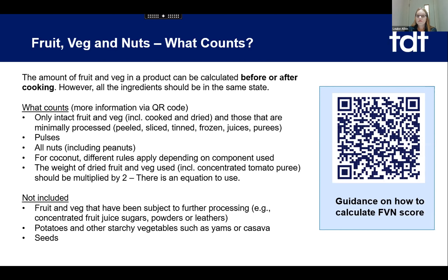Coconut can be counted, but there are different rules depending on the component used. The weight of dried fruit and veg used — you have to apply a multiplication to the weight. There is an equation to use which accounts for the concentrated nutrients within the dried product or concentrated tomato puree. Not included are, crucially, fruit and veg that have been subject to further processing. The guidance says concentrated fruit juice sugars, powders and leathers are not counted.